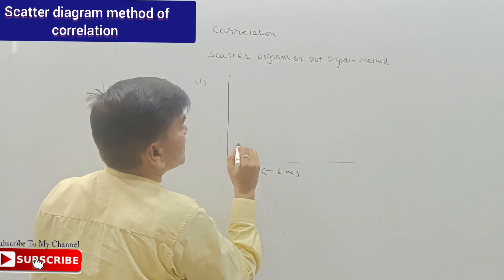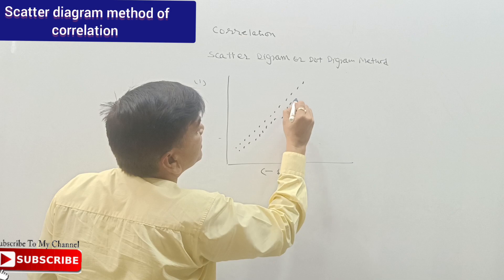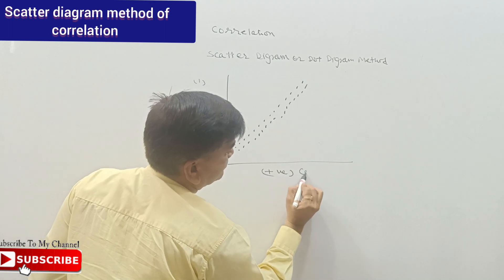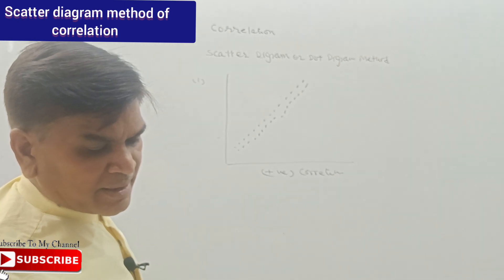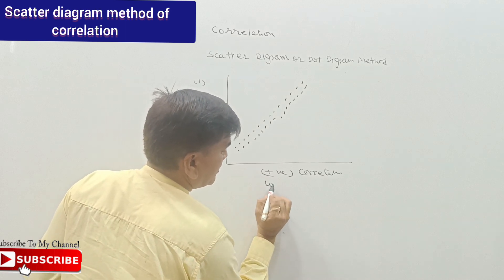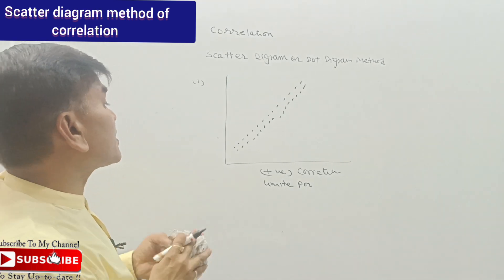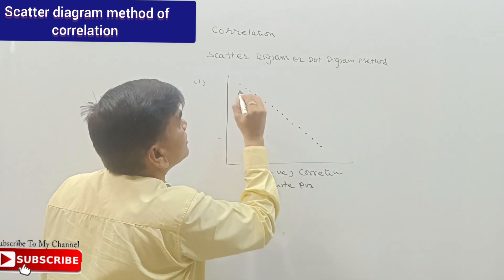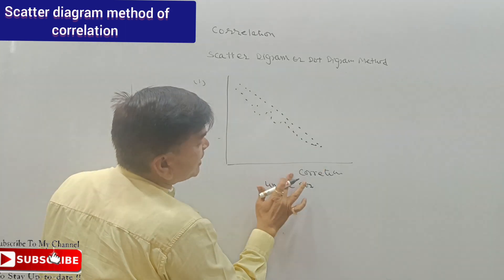Suppose x series has these dots and y series also has equal dots going in the same direction — we will say positive correlation. If the dots are spread in such a way that x series is plotted here and y series is also floating around — we will say it is limited positive correlation. Similarly, when dots go in the opposite limited direction, it is limited negative correlation.